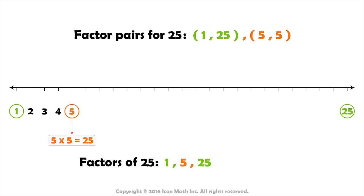We don't need to go any further because we covered all possible factors for 25. So, for the number 25, the factor pairs are 1 and 25, 5 and 5.